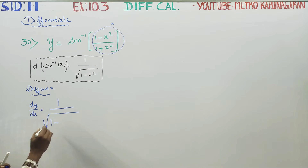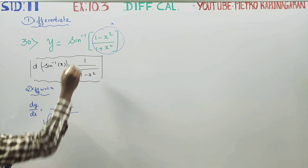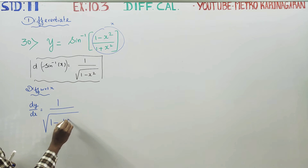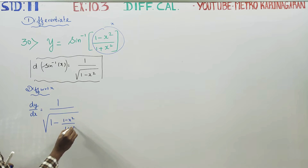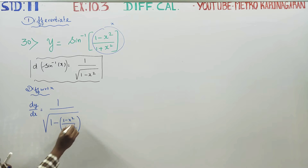We have 1 by square root of (1 minus x square), and the argument inside sin inverse is (1 minus x square) by (1 plus x square) whole square. We need to differentiate this expression.